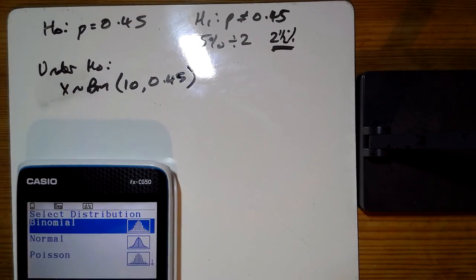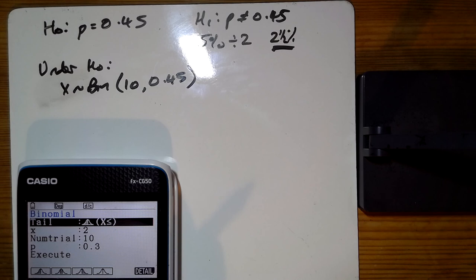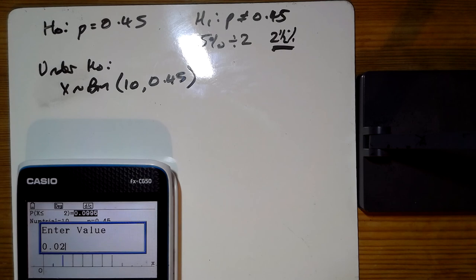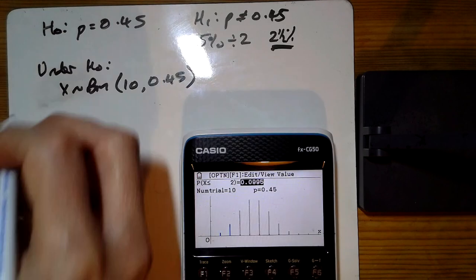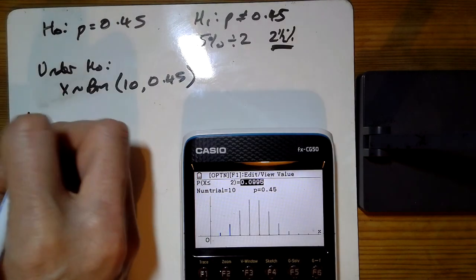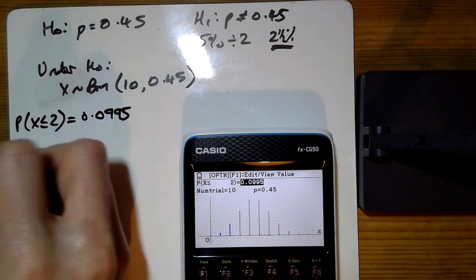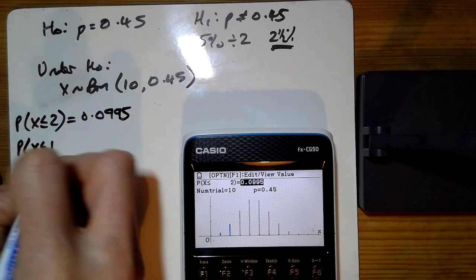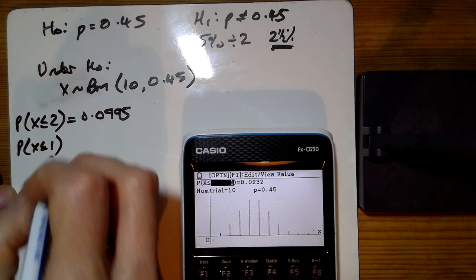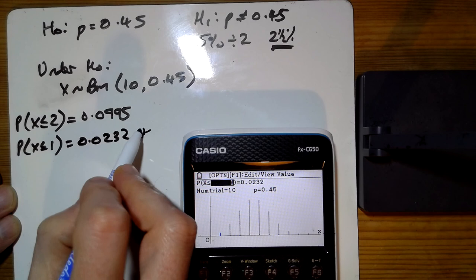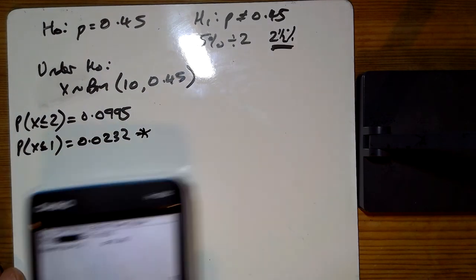So the binomial less than or equal to 0.45, let's have a look. Stick 0.025 at the end there. The probability that X is less than or equal to 2 is 0.0995 - that's too big. So let's go down 1. Less than or equal to 1 is 0.0323, so this is less than 5%, so that's going to be the critical value at one end.